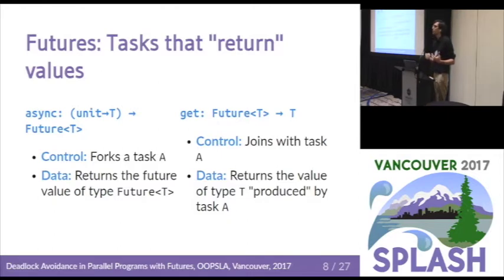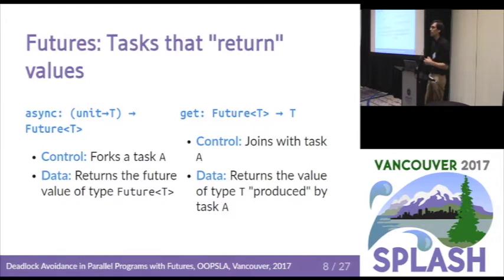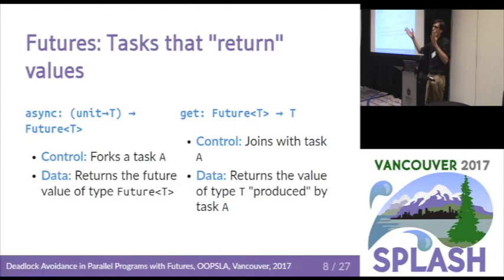Futures are based on this model of fork-join. You have a primitive here called async that expects a function that just returns a value. In terms of parallel control, this creates a new parallel task that will run the function and at some point produce this value. Then you use the other primitive called get to retrieve the value. Once you call get, the caller gets blocked until the parallel task producing the value terminates. Get can actually be executed by multiple tasks at the same time, and multiple times by the same task.